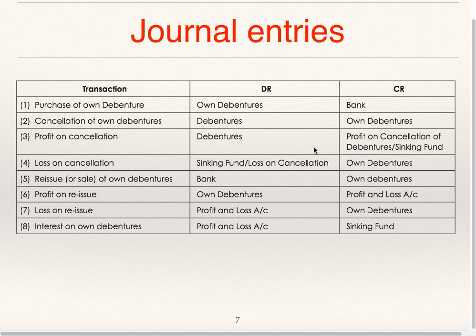If the company purchased 100 face value debentures at 110, the entry at the time of purchase is: own debentures to bank 110. On cancellation: debentures account debit 100, loss on cancellation debit 10, to own debentures account. For reissue or sale of own debentures: bank to own debentures. Profit on reissue: own debentures to profit and loss account. Loss on reissue: profit and loss account debit to own debentures.